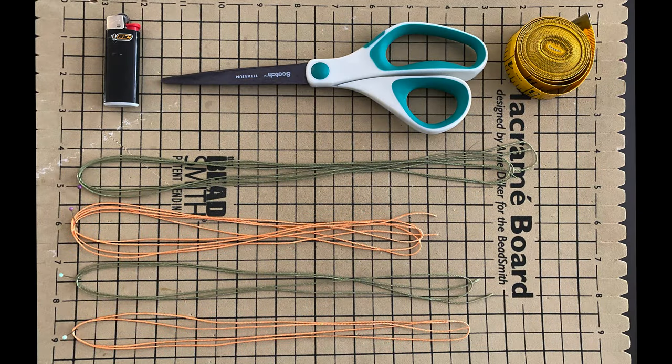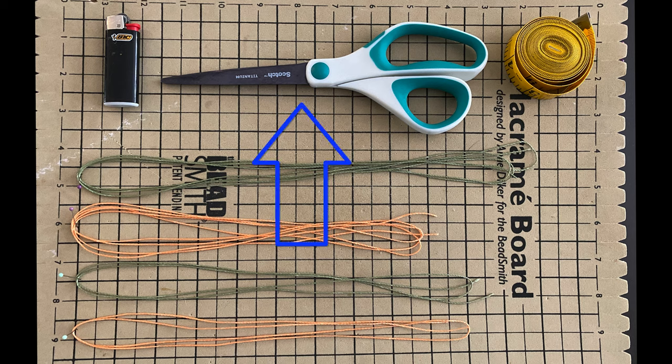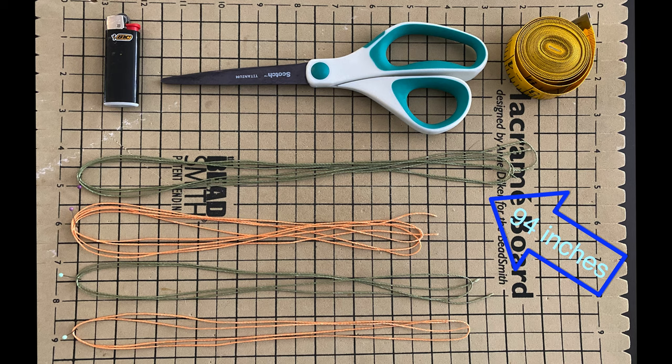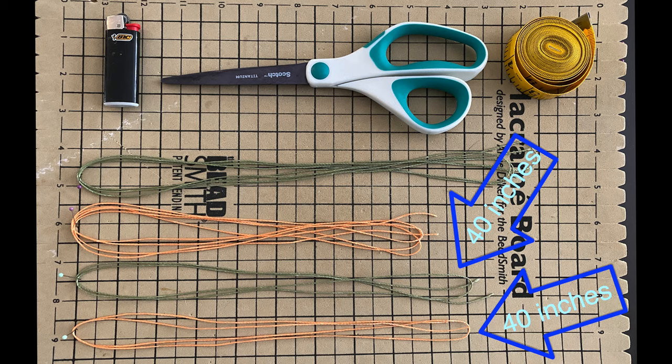To make this anklet you're going to need a lighter, a pair of scissors, a measuring tape, one long string of 94 inches, one long string of 80 inches, and two shorter strings of 40 inches each.